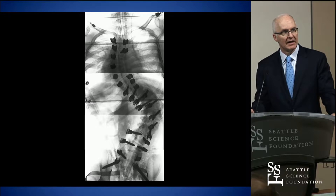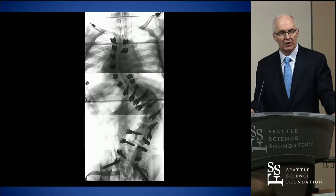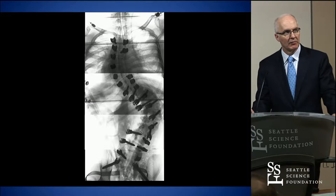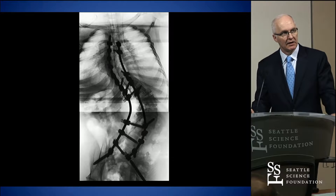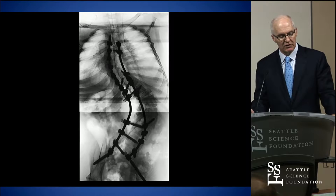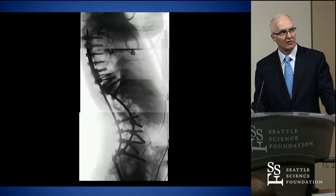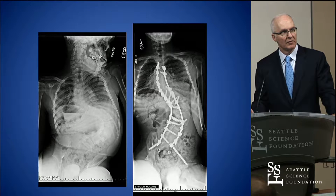Here's the intraoperative. Navigation has been done, screws have been placed. There are no screws in the concavity of the apex because we would have had to go through the abdomen to put them in. We thought about a number of different things and decided to work on it. I did a partial VCR, loosened a bunch of screws as we progressively corrected it, brought it around, and got it to look something like this.